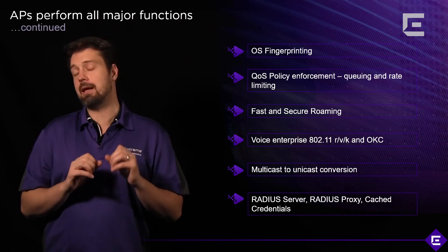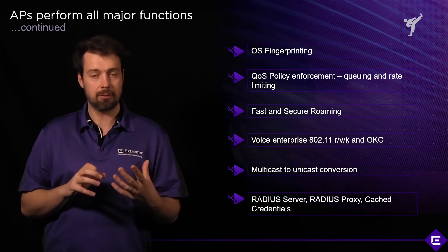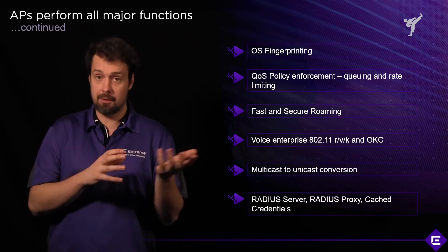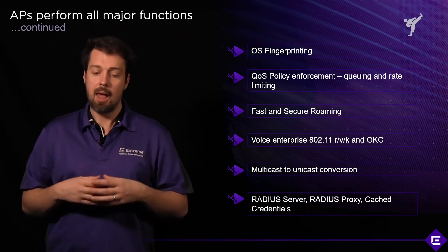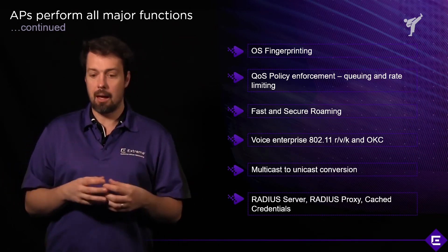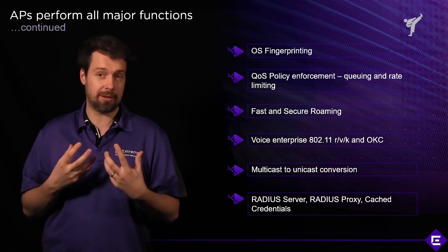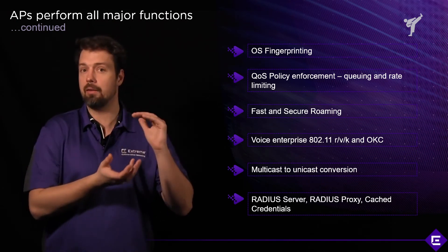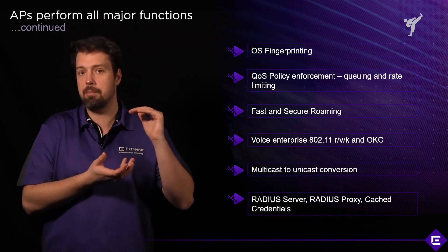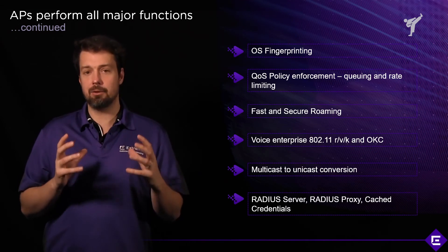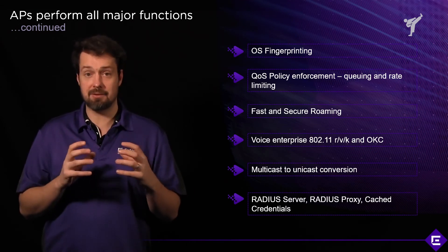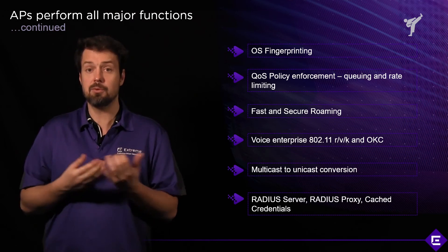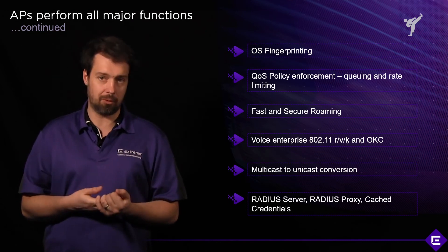The AP can actually act as a RADIUS server. It can talk to an Active Directory directly and authenticate users as a RADIUS proxy server, and can also cache credentials. There's a use case where you can use the local database on the AP and use that AP as the authentication server. It's very flexible in terms of the use cases you can support.